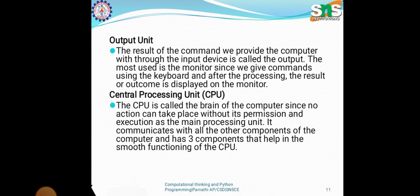Then we will see about the central processing unit. The central processing unit is called the brain of the computer. No operation will take place without the permission and execution of the main processing unit. It communicates with all the other components of the computer and has three components that help in the smooth functioning of the CPU.